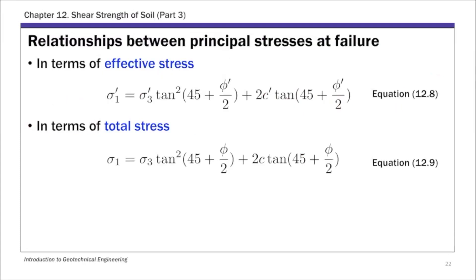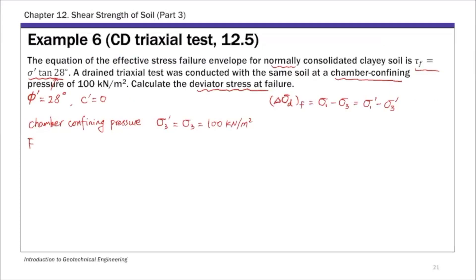So this is the equation we talked about in part two of this chapter. So that's the effective stress, major principal stress, and effective stress, minor principal stress. So we're going to use this expression here to calculate σ1'. So using equation 12.8, so this equation here, we have C' = 0 and φ' = 28°.